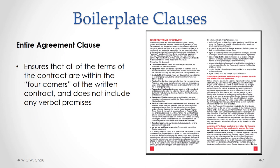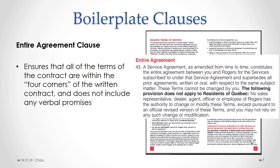A common boilerplate clause that almost every contract has is an entire agreement clause. Such a clause ensures that all of the terms of the contract are within the so-called four corners of the written contract and does not include any verbal promises that have not been put into writing in the contract itself. The Rogers contract also has an entire agreement clause, found in section 43.